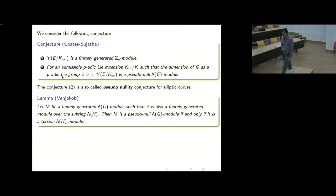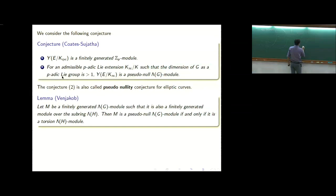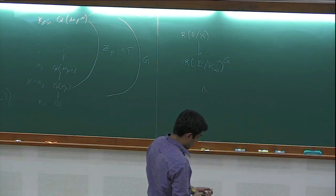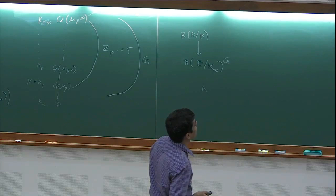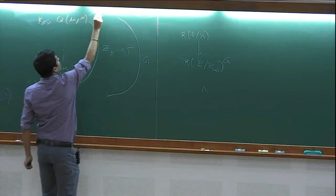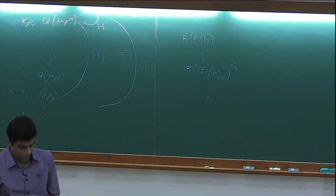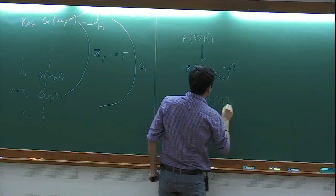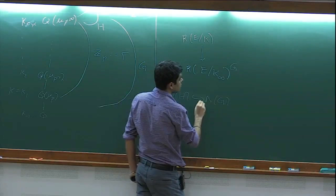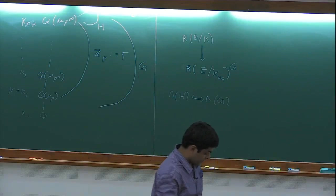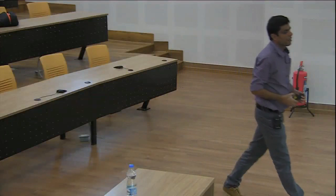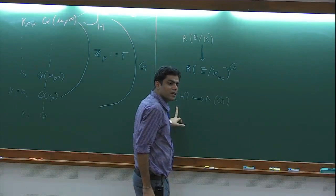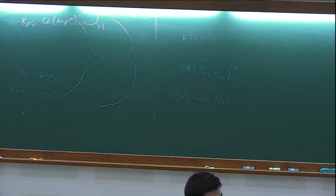There is another equivalent definition of pseudonullity due to Uchida. Given a finitely generated Λ(G) module M, which is also a finitely generated Λ(H) module, M is pseudonull as a Λ(G) module if and only if it is torsion as a Λ(H) module. Here H is the Galois group of K_∞ over K_cyc, a subgroup of G. So we basically need to check that the dual fine Selmer is torsion as a Λ(H) module, which is equivalent to checking its rank is zero.